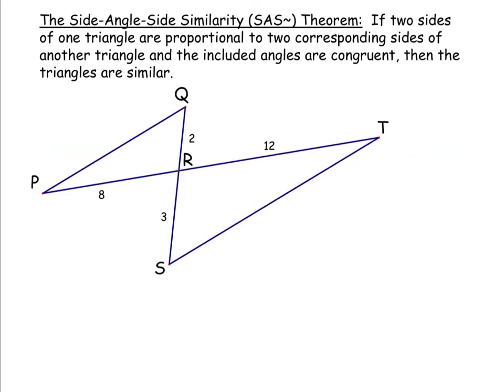The last way to prove triangles are similar is the side-angle-side similarity theorem, or side-angle-side similarity for short. This says that if two sides of one triangle are proportional to two corresponding sides of another triangle, and the included angles are congruent, then the triangles are similar. The idea of an included angle is important.